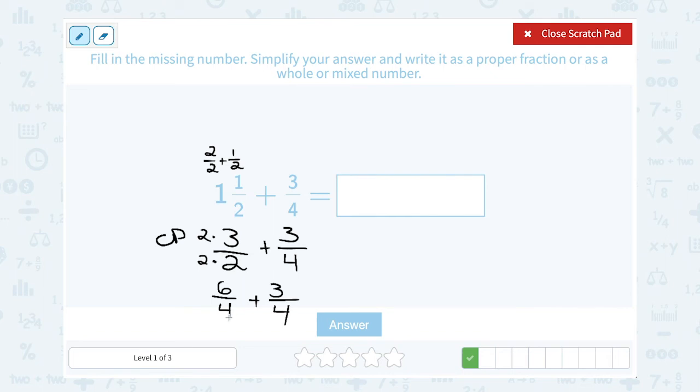So we get six over four plus three over four. And remember, the denominator or bottom number doesn't change. It's still going to be out of four, and you just add the top numbers. So three plus six, or six plus three, gives us nine.